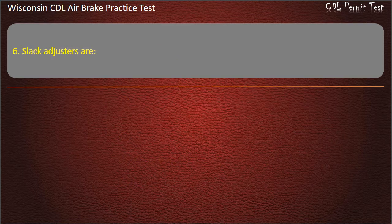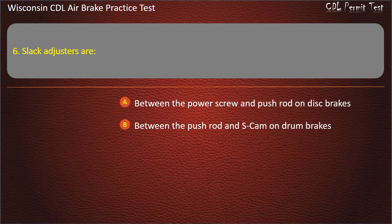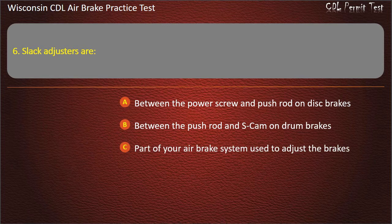Question 6. Slack adjusters are: Between the power screw and push rod on disc brakes. Between the push rod and S-cam on drum brakes. Part of your air brake system used to adjust the brakes. All of the above. Answer: All of the above.